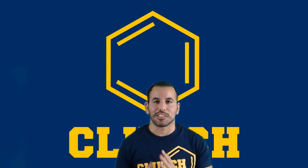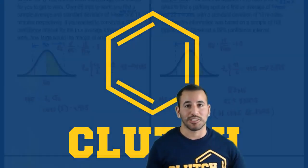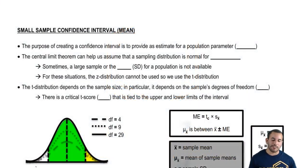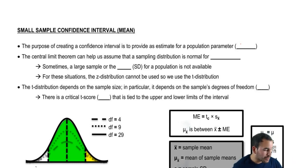Alright you guys, so last time we saw the large sample confidence interval. Let's go ahead and move on to the small sample. The purpose of creating a confidence interval, again this is just rehashed, is to provide an estimate for the population parameter. And we're still working with the parameter of the mean.